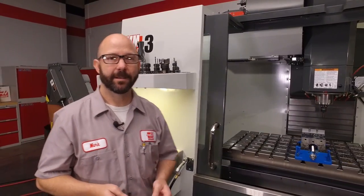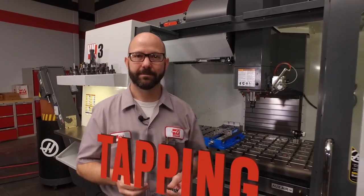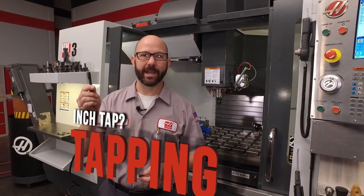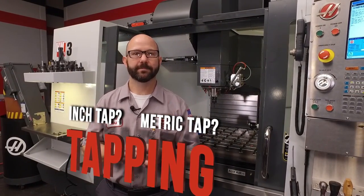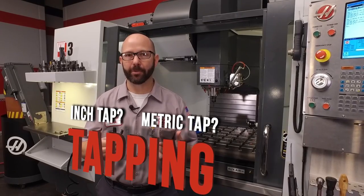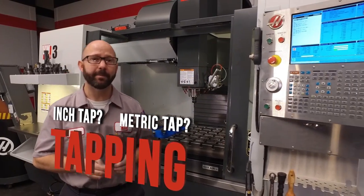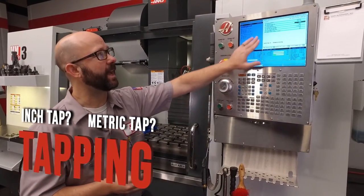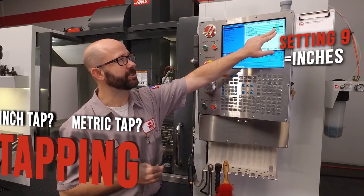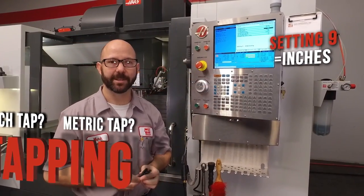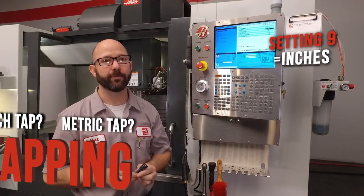Programming a tap should be easy, but sometimes it can be confusing. You might have to program an inch tap or a metric tap. Today we're going to show you how to do both on a machine that's set up in inch mode, with setting 9 dimensioning set to inch. If your machine is set to millimeters, we've got a different video for you.